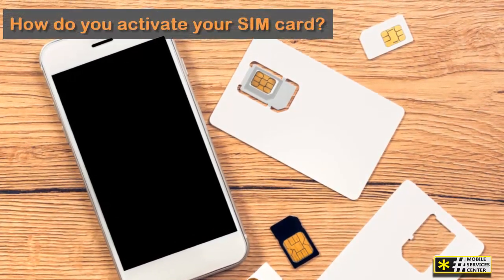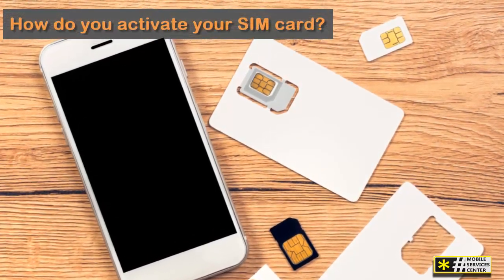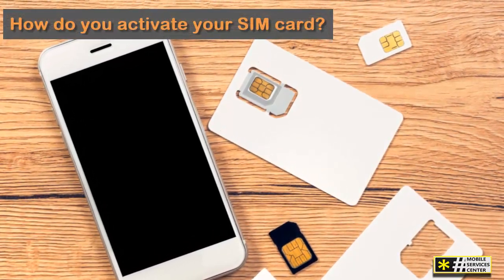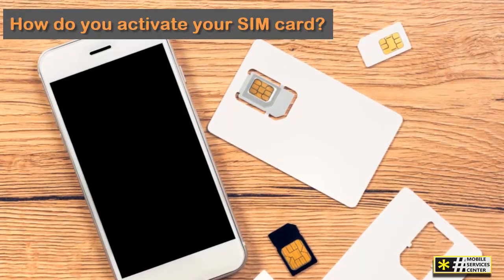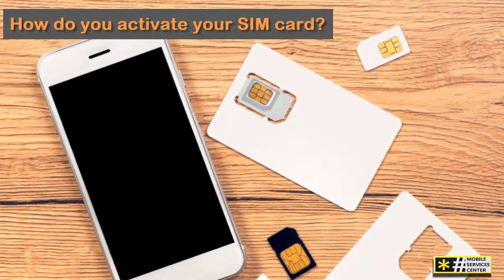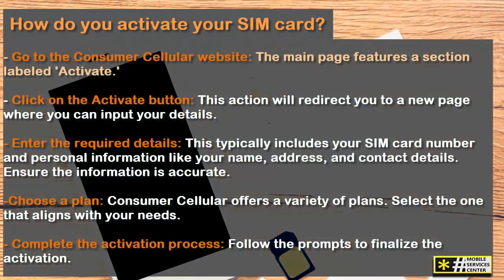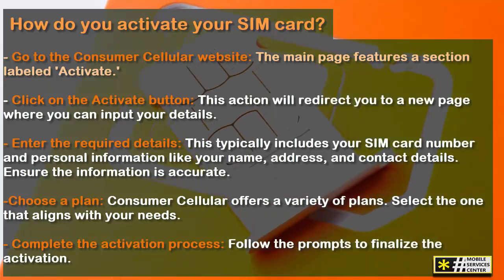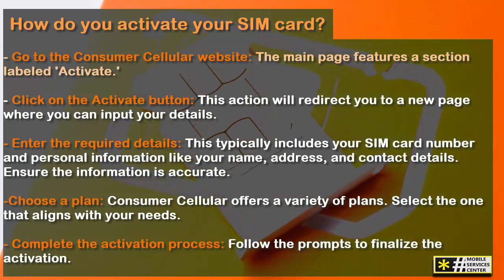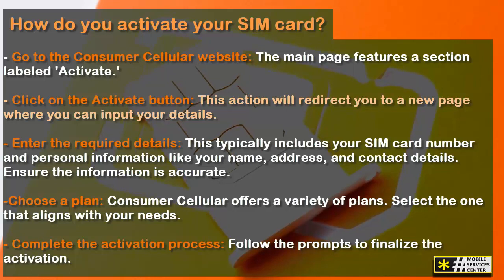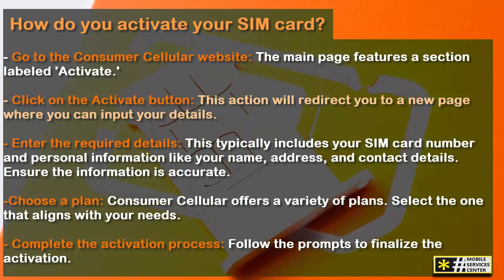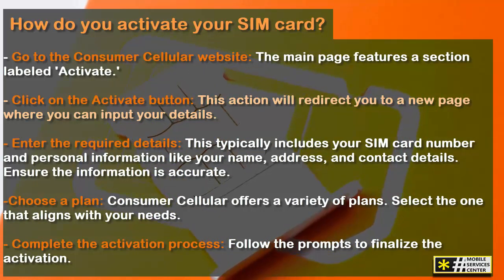How do you activate your SIM card? Let's break down the step-by-step process. Go to the Consumer Cellular website. The main page features a section labeled Activate. Click on the Activate button. This action will redirect you to a new page where you can input your details.